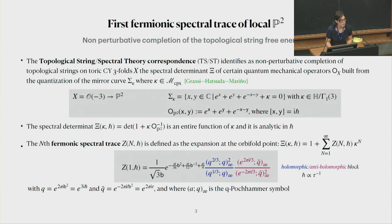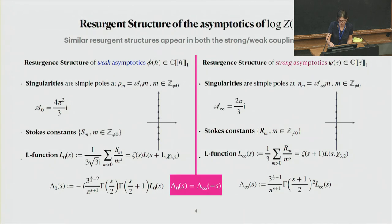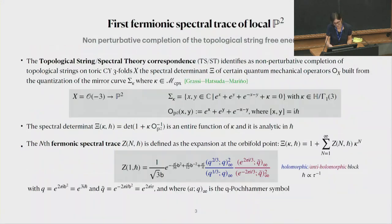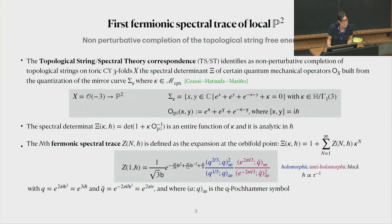That is the case of the first fermionic spectral trace of local P2. As I studied in joint work with Claudia, we proved that the generating function of the Stokes constants are holomorphic quantum modular forms. More generally, we introduced the notion of modular resurgent structure, conjecturally supposed to describe holomorphic quantum modular forms. The first fermionic spectral traces arise in the context of the topological string spectral theory correspondence of Grassi-Hatsuda-Mariño, where a quantum mechanical operator is constructed by quantizing the mirror curve of a local Calabi-Yau threefold such as local P2. The fermionic traces are the coefficients in the expansion at the orbital point of the spectral determinant of the inverse operator, given in terms of holomorphic and anti-holomorphic blocks expressed through q-Pochhammer symbols.